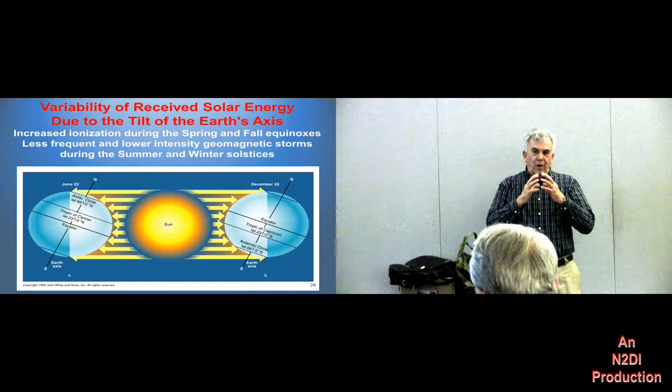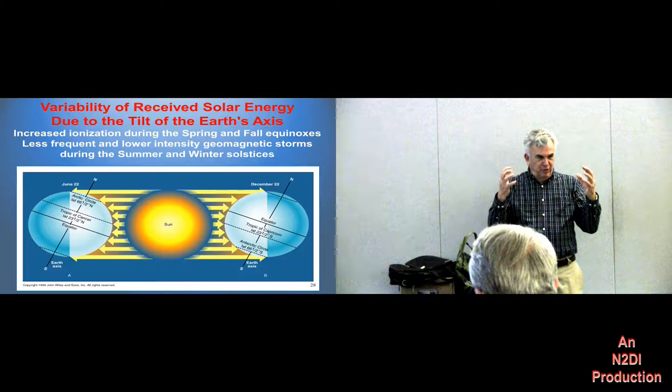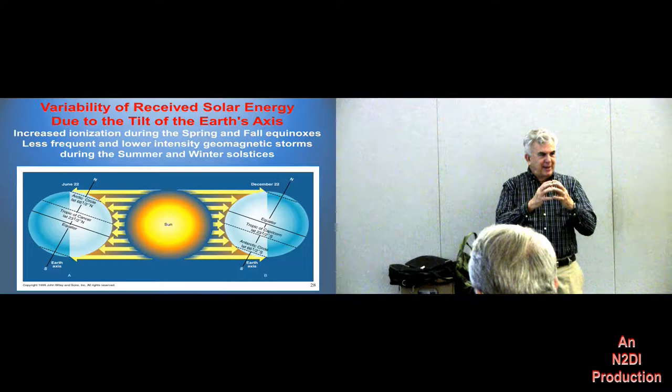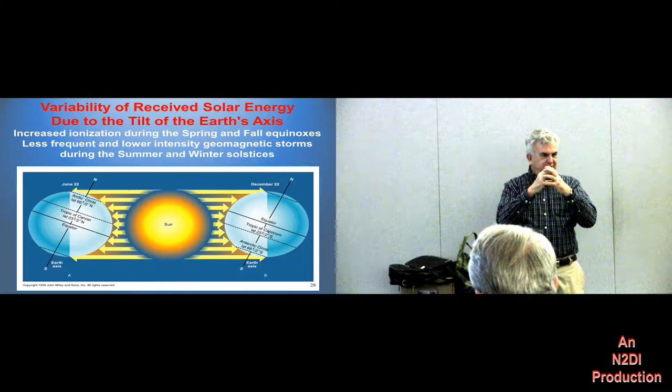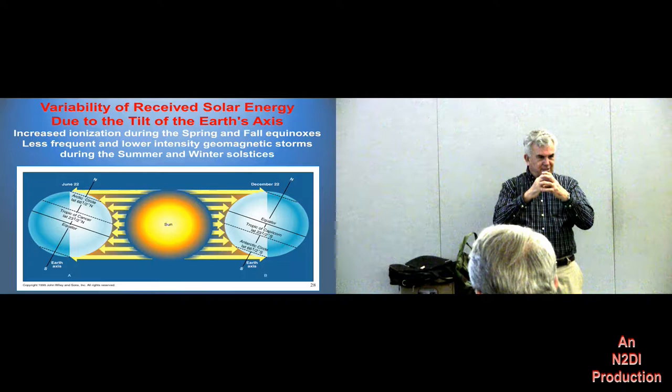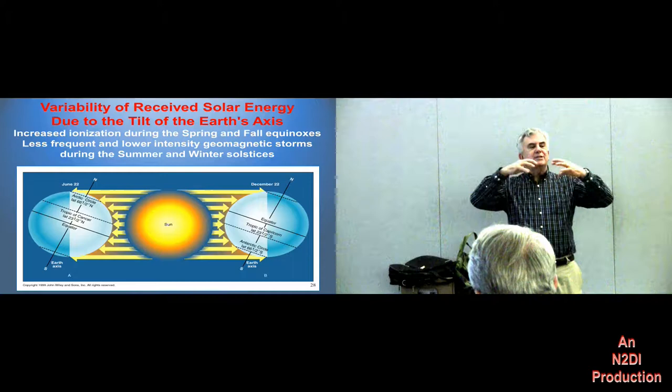What matters for HF propagation is how many electrons there are per unit volume in the ionosphere — you want high electron density. What happens in the summer is the ionosphere gets overheated when we're facing the sun. So instead of all these electrons being in a compact place like they are in the winter, when the ionosphere is cold and we have high electron density, in the summer we've got more, but the ionosphere expands because it's hot.